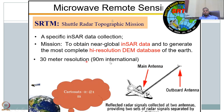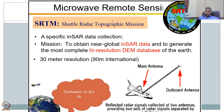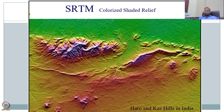SRTM provides 30-meter resolution domestically and 90 meters internationally. The CartoSat-2 Indian mission has one-meter resolution — these are the updated resolutions, and they are getting better every two or three years due to significant investment. This gives an example — the SRTM NASA product for Harrow and Cass Hills in India, where high elevations are shown in pink and violet and lower elevations in green.